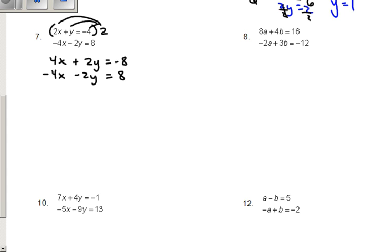Now I think we can see those opposites that we're always looking for, so we add down. 4x plus negative 4x cancels. 2y plus negative 2y cancels. That leaves us with 0. On this side, negative 8 plus 8 is also 0. When you get an equation that works out to be 0 equals 0, of course that is true. 0 does equal 0. So in this case, you have infinite solutions.